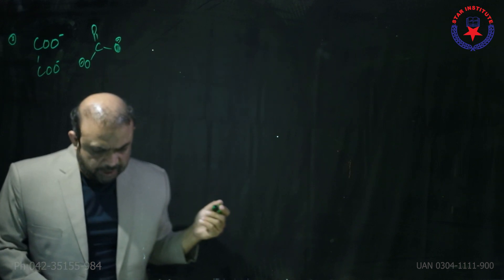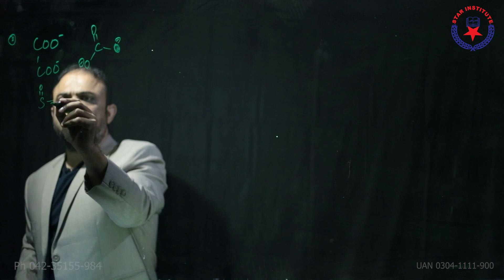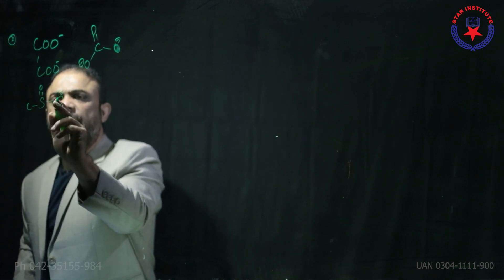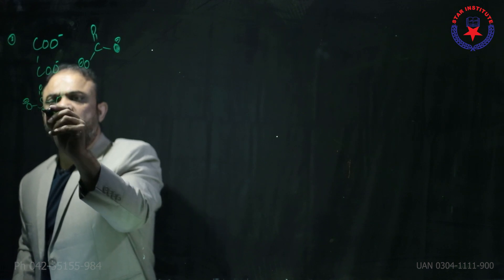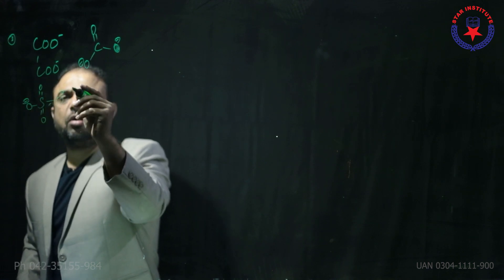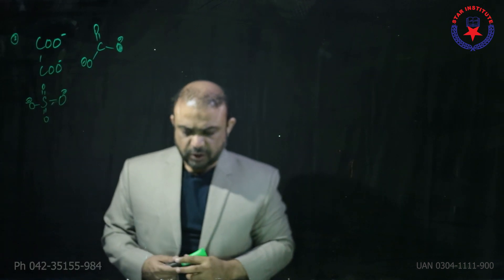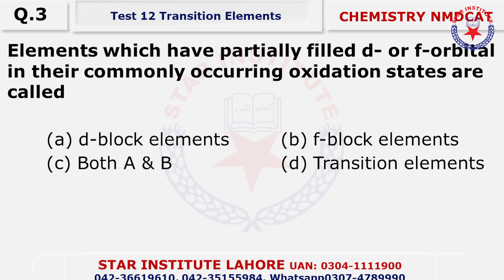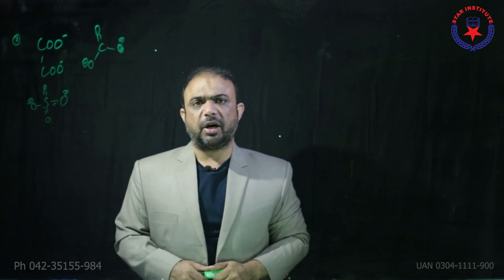Option C: sulfate — it is also a bidentate ligand because sulfur has a negative charge on oxygen, so obviously these are bidentate ligands. The answer is none of these. Question number three: which have partially filled D or F orbital in their commonly occurring oxidation state — this is the definition of transition metal. Choice delta is your answer.